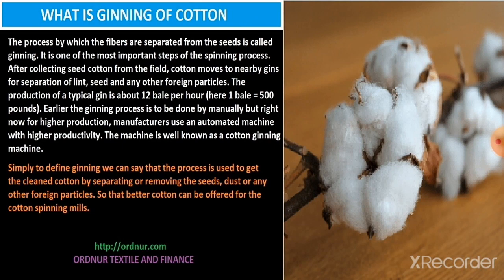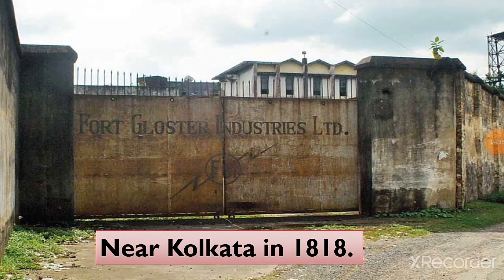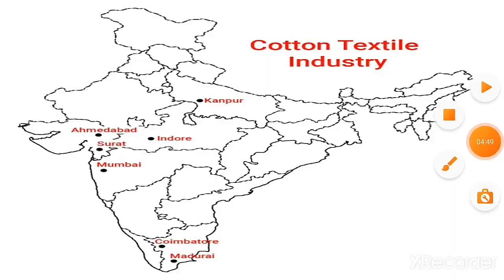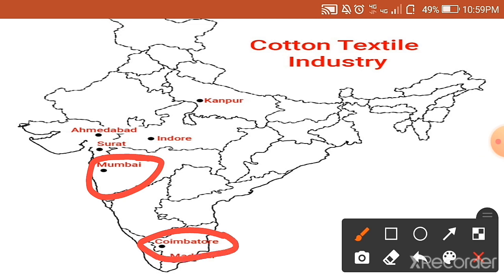Fiber here means cotton. After collecting the cotton from the field, cotton moves to nearby gins for separation of lint, seed, and any other foreign particles. This process is called ginning. The first cotton mill in India was established in 1818 at Fort Gloucester near Kolkata, but was a commercial failure. According to Tamil Nadu, Coimbatore is called the Manchester of South India.